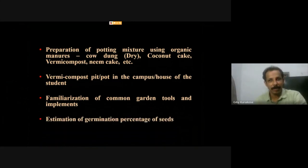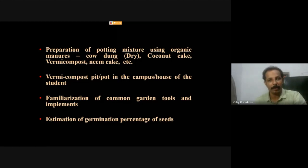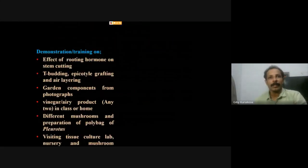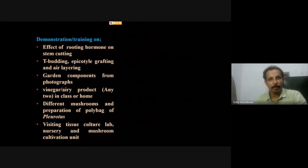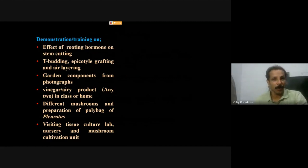Hands-on training also covers estimation of germination percentage, which is essential for understanding the science behind seed germination and for nursery management. Demonstrations include the effect of rooting hormone on stem cutting, tea budding, epicortile grafting, and air layering.